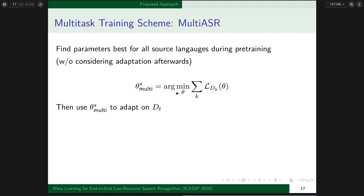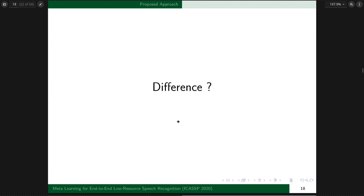But there's a difference. The objective in multi-task training, which I call multi-ASR, is a summation of losses of individual languages. Unlike multi-ASR, MAML directly evaluates loss on theta rather than theta prime. It doesn't consider the inner-loop learn process. After pre-training, we use theta star to adapt on Dt.